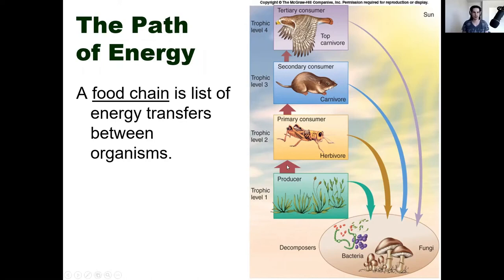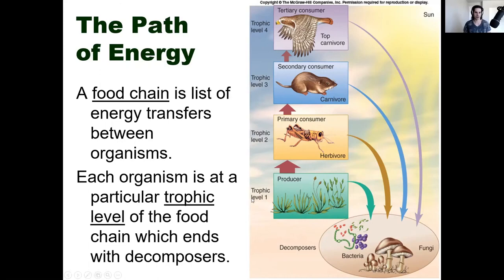That's the food chain — the energy movement. When talking about the chemical component, all of these things will eventually die and become recycled by your decomposers, such as bacteria and fungi. That's where your chemical components become recycled and replaced.